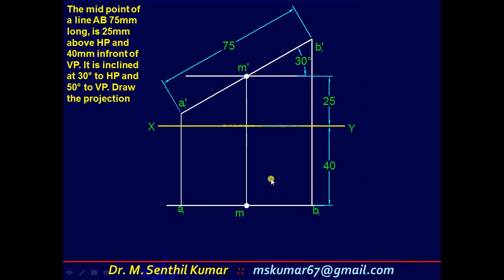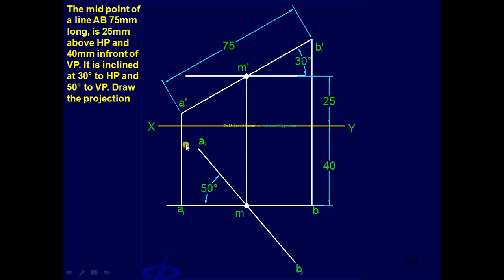Follow the similar kind of procedure for the preliminary top view by considering 75mm at 50 degree angle. A2 B2 length is 75, its angle is 50 degrees. This is the preliminary top view. Complete the preliminary top view set by drawing projectors. The trapezium A2 B2 B2 dash A2 dash is the preliminary top view set.